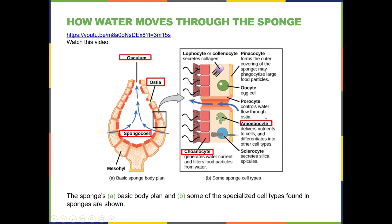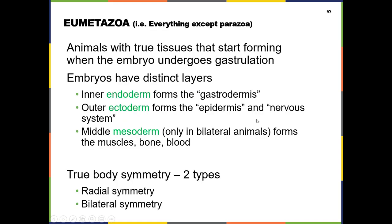I've highlighted some of the cell types and vocabulary you need to know regarding the sponge. Now the Eumetazoa is the other branch of the animal kingdom — everything other than the Parazoans, other than the sponges. These animals have true tissues because their embryos undergo gastrulation.